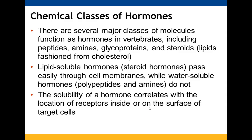Classes of hormones include peptides, amines, glycoproteins, and steroids. Lipid-soluble hormones — steroid hormones — can pass through cell membranes, the hydrophobic bilayer. Water-soluble hormones, the polypeptides and amines, cannot. Receptor location correlates with hormone solubility — whether the receptor is inside the cell or on the cell surface.